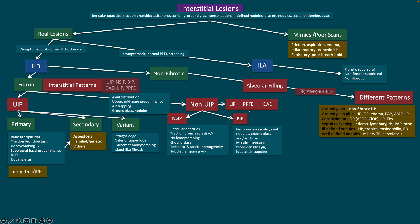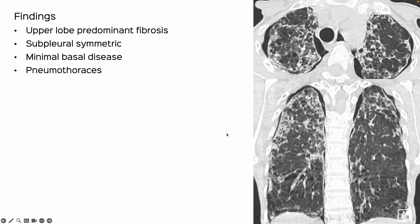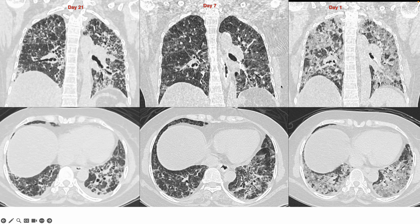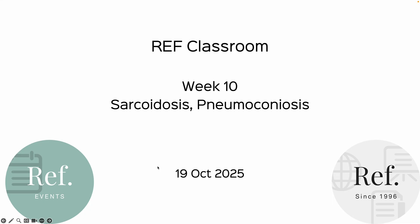Week nine tackles the other three less common interstitial pneumonias: LIP, PPFE, and DAD. LIP appears in the context of Sjögren's, HIV positivity, etc. PPFE shows upper lobe predominant disease. DAD goes through an exudative phase, organizing phase, and fibrotic phase. Clearly there are many mixed presentations — a non-fibrotic component that becomes fibrotic — which we need to understand well.